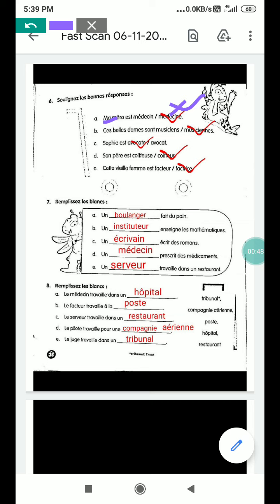Then part B says belle dames, these beautiful ladies. Dame is ladies are magician. This is ladies are there, so feminine form. This is the feminine form, musician. Sixth part, part C, Sophie, a avocat. Avocat is advocate, so feminine form.